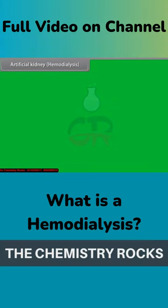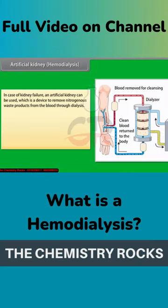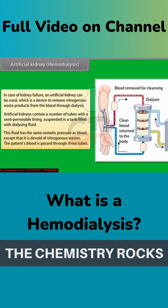An artificial kidney can be used in case of kidney failure, which is a device to remove nitrogenous waste products from the blood through dialysis. Artificial kidneys contain a number of tubes with a semi-permeable lining suspended in a tank filled with dialyzing fluid. This fluid has the same osmotic pressure as blood, except that it is devoid of nitrogenous wastes.